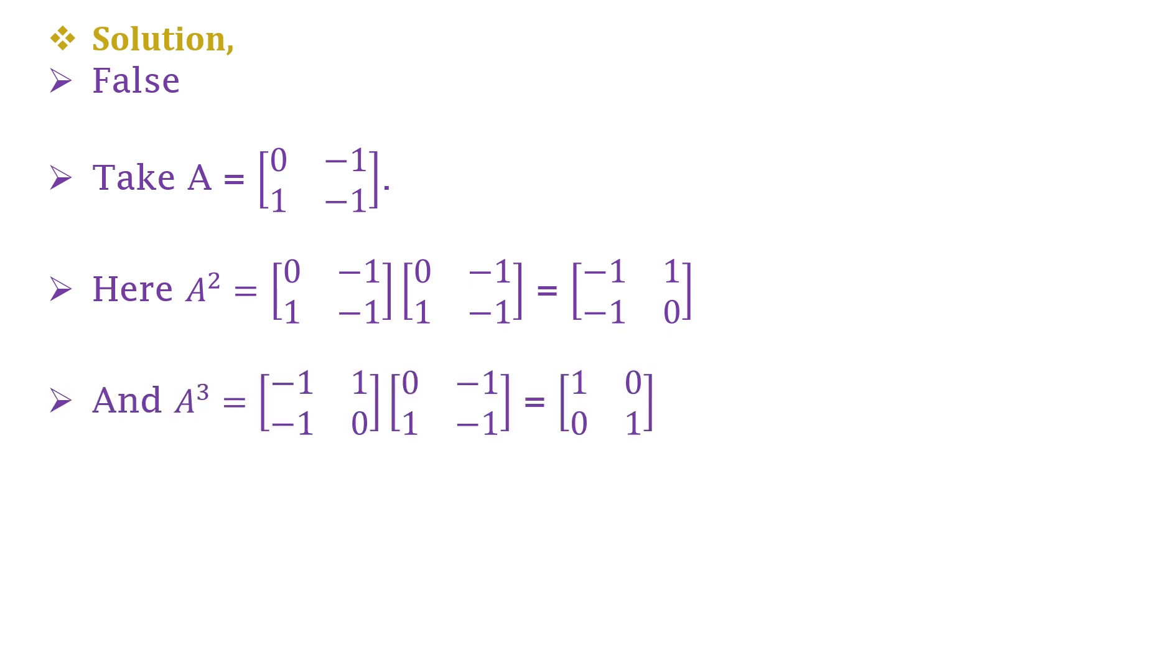And A³ equals the identity matrix of order 2×2. So clearly A³ equals I and A is a non-diagonal matrix. So the given statement is false.